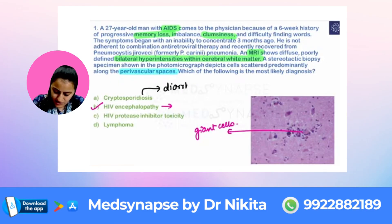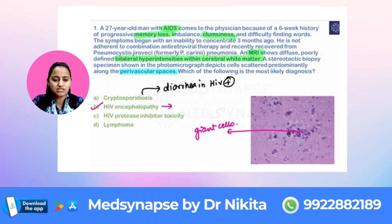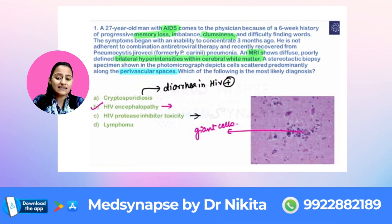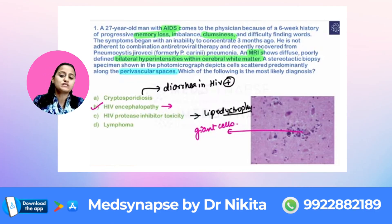Cryptosporidium causes diarrhea in an HIV-positive patient — that history will be there. There is no memory loss or dementia feature here. Remember, protease inhibitors cause lipodystrophy as a predominant side effect.